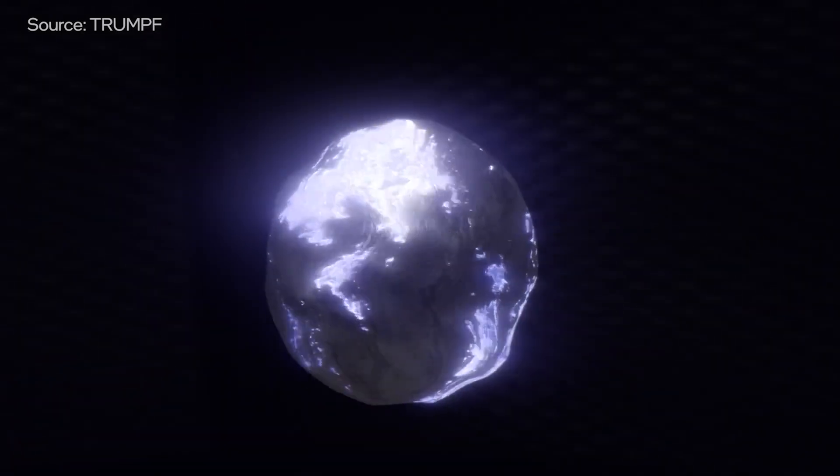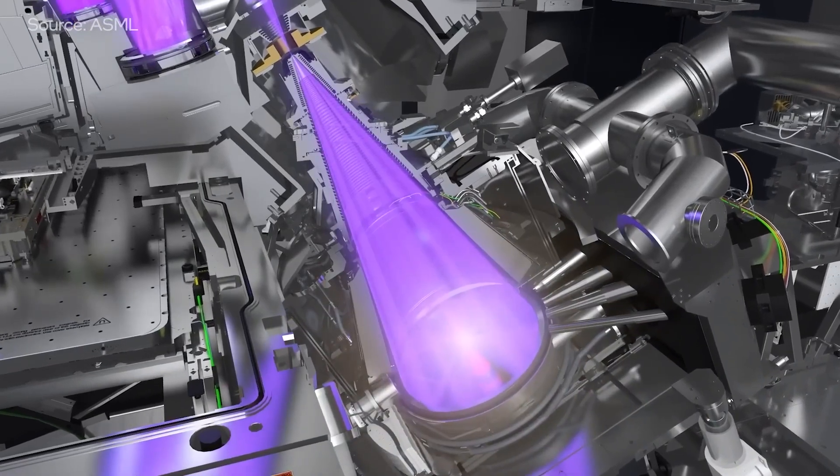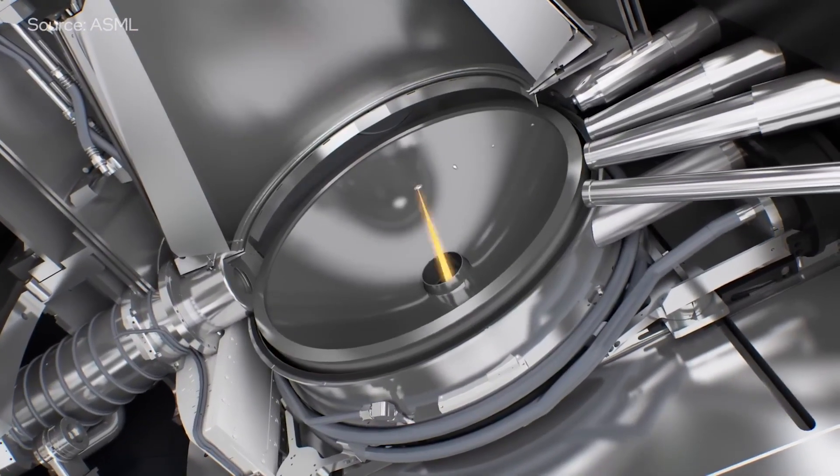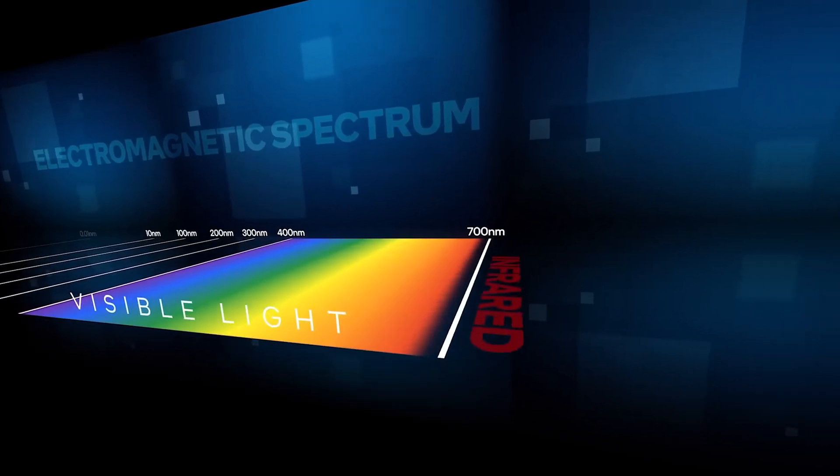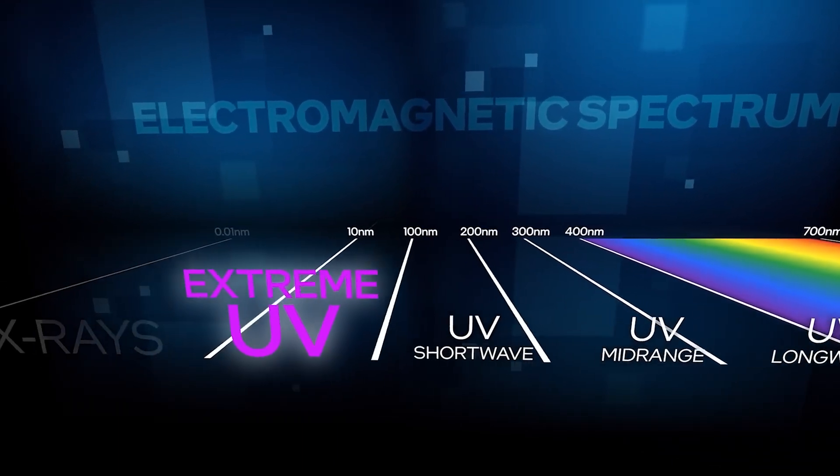You might be wondering what's next. I mean, a silicon atom is 0.2 nanometers wide, so you can only shrink the feature size so far. And as you do, you also run into issues like electron migration, where the electrons can just jump over the increasingly small gap without being let through by the gates.